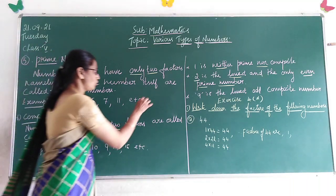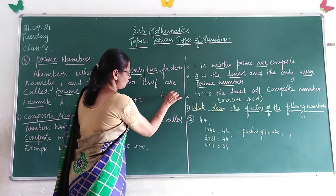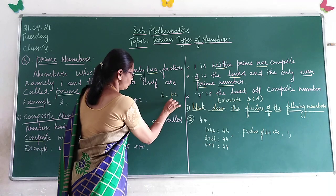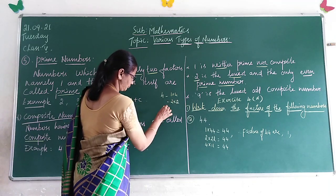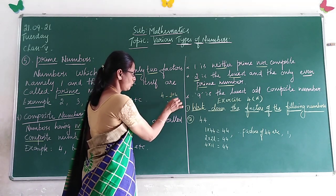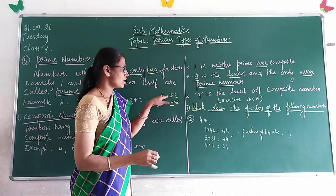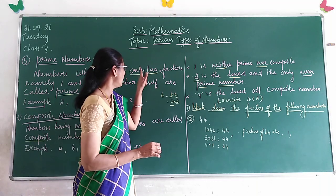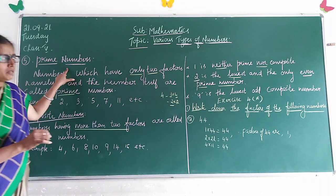Suppose if you take 4, children, you can write 2 fours are 4, or 2 twos are 4, isn't it? So 4 has 1, 2, and 4. It has three factors, so 4 is not a prime number.